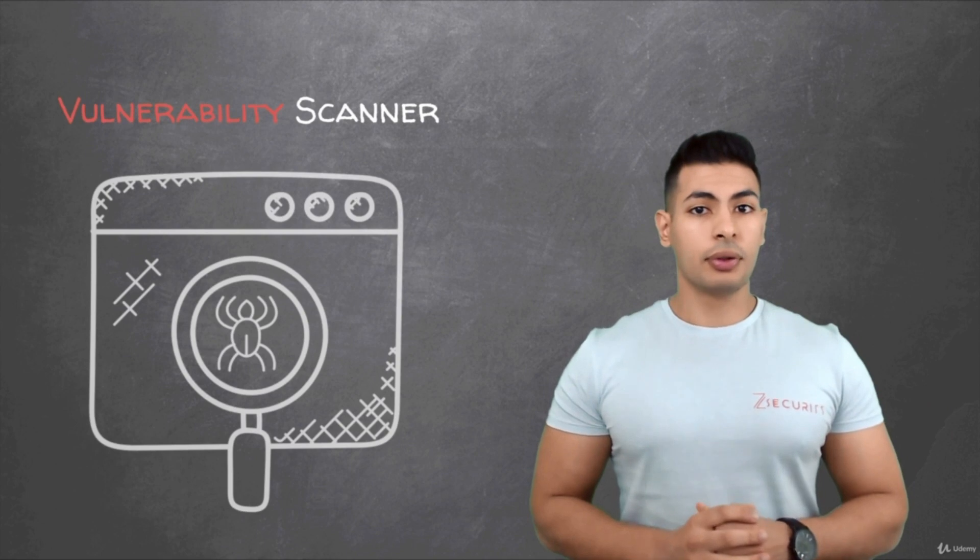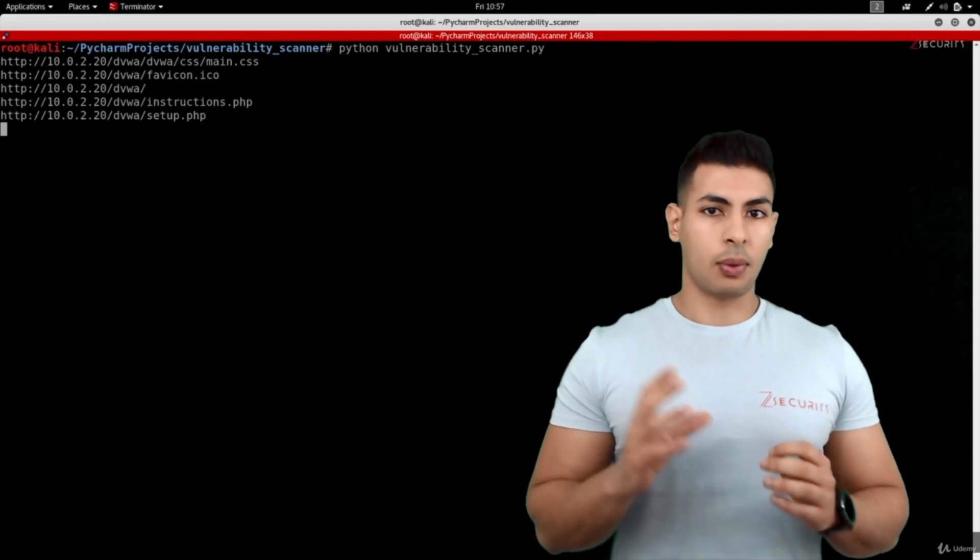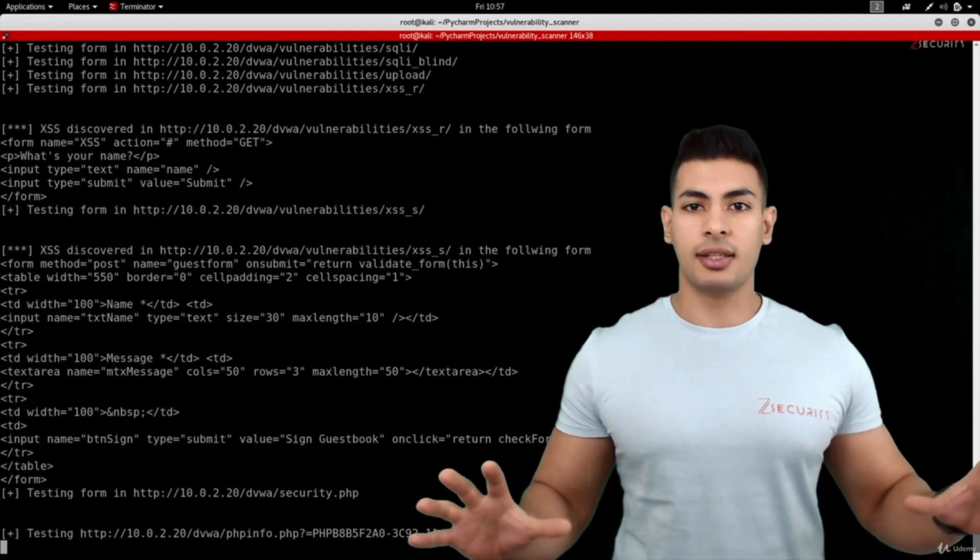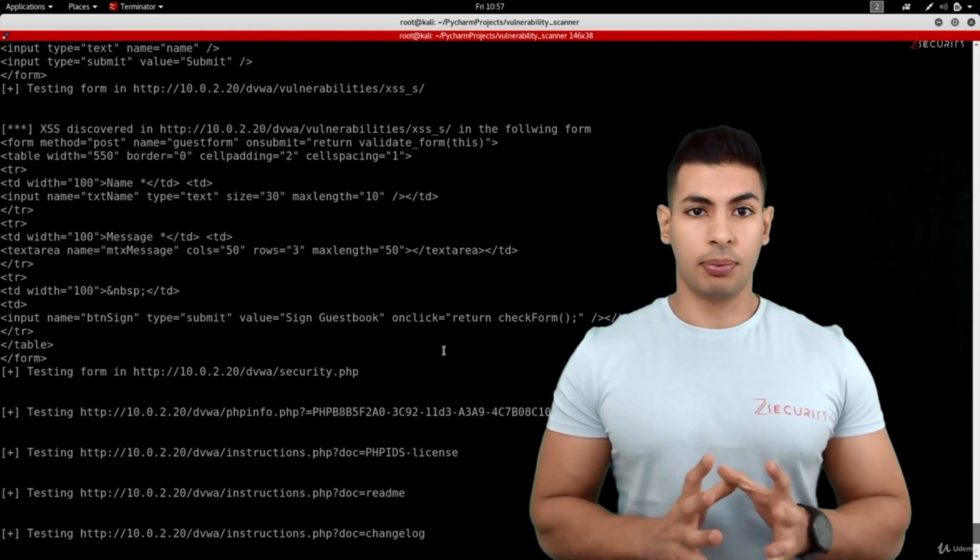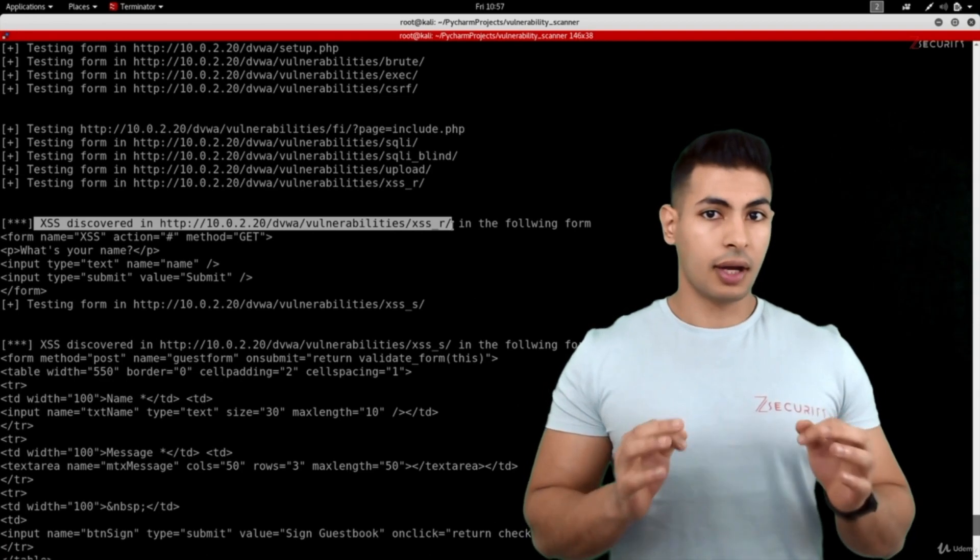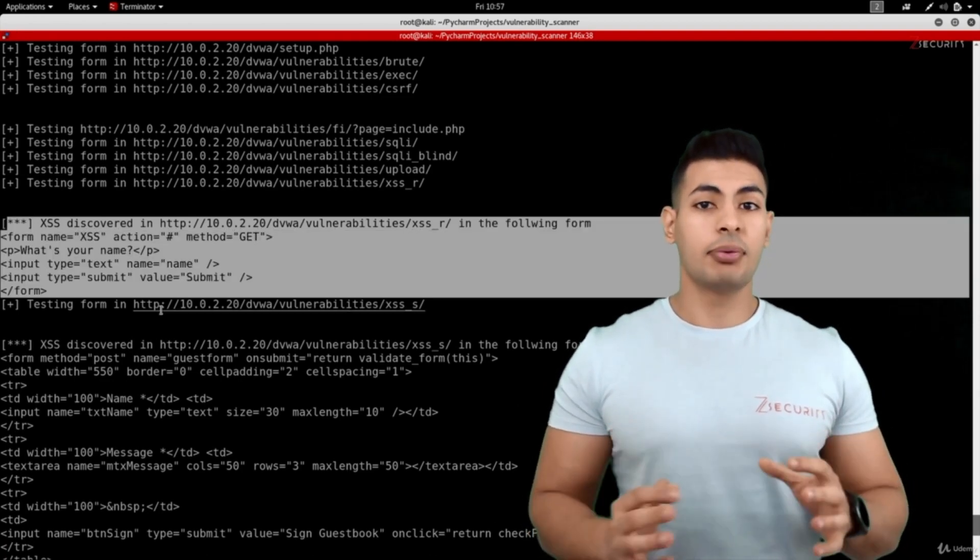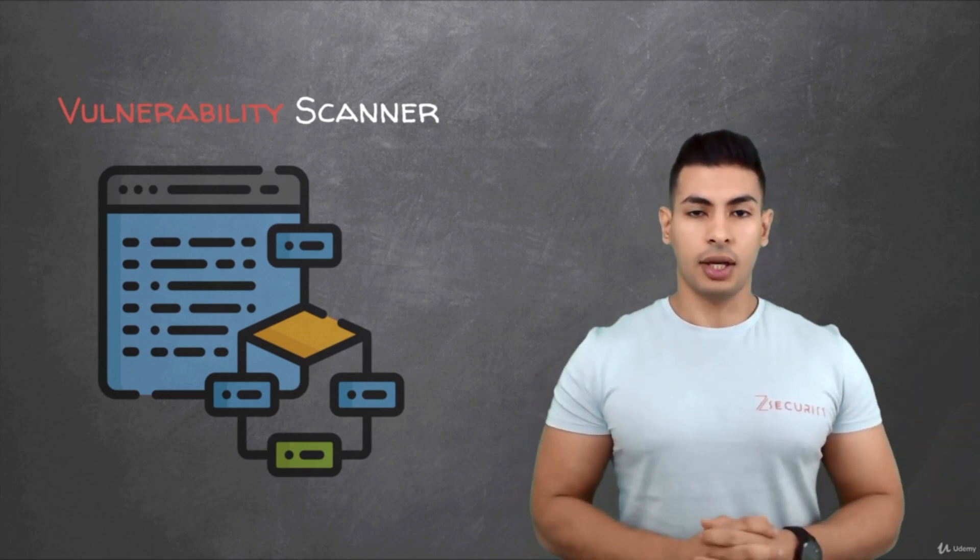Finally, we're going to build a generic vulnerability scanner. This is a program that takes a website as an input and scans the whole website for weaknesses and vulnerabilities. Once done, it's going to show us a report of all the discoveries. And we're going to write this program in a way so that it can discover any type of vulnerability. As we write this, you're going to learn more about object-oriented programming and how to structure your program in a way so that it can be easily extended.